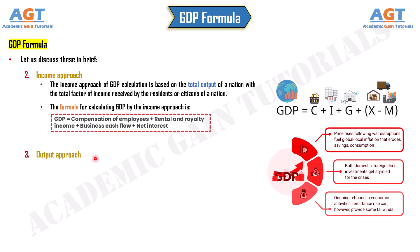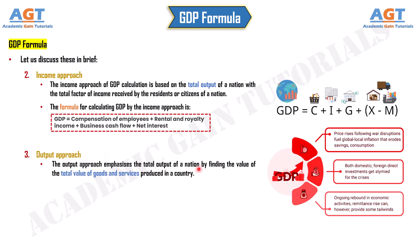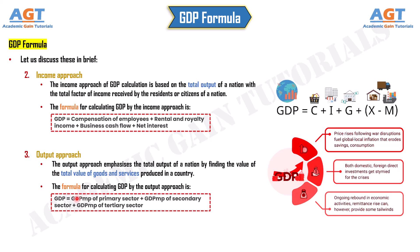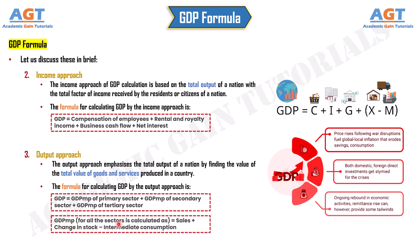Number 3: Output Approach. The output approach emphasizes the total output of a nation by finding the total value of goods and services produced in a country. The formula is: GDP = gross domestic product at market price of the primary sector + gross domestic product at market price of the secondary sector + gross domestic product at market price of the tertiary sector. The gross domestic product at market price for all sectors is calculated as sales plus change in stock, minus intermediate consumption.